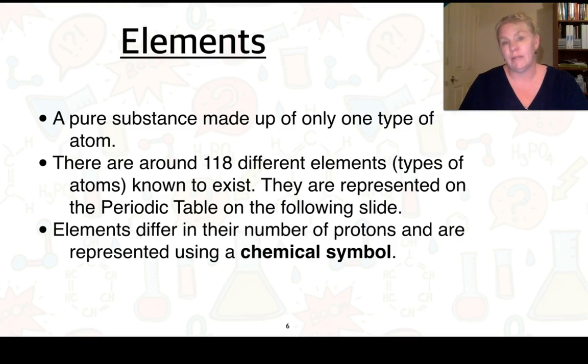Next thing we need to look at are elements. Elements are a substance that are made up of just one type of atom. There are about 118 different elements, or types of atoms, known to exist, and you would have seen them represented on a periodic table. I've got a periodic table on the following slide. Elements differ in their number of protons and are represented by a chemical symbol.